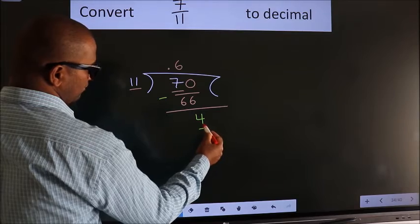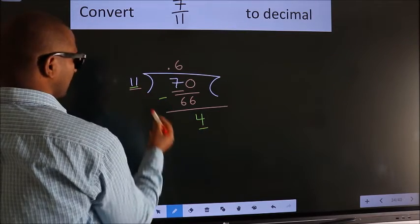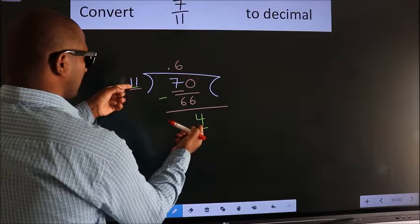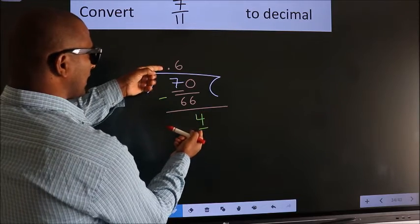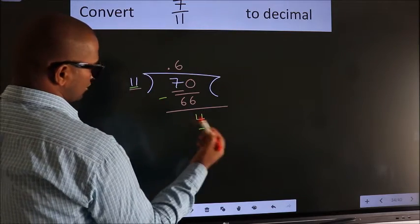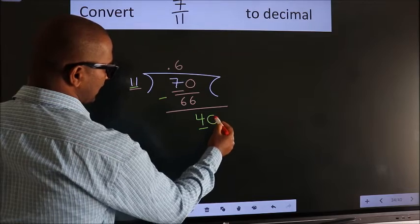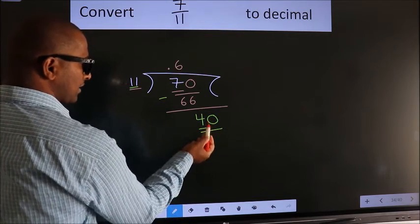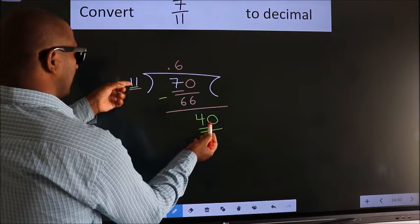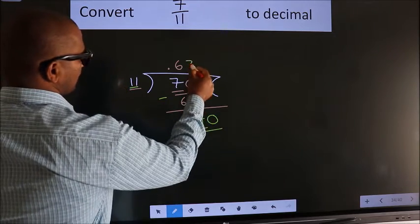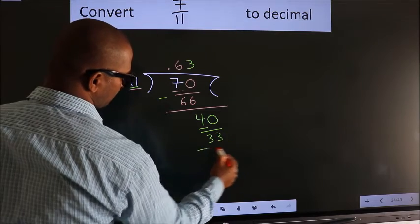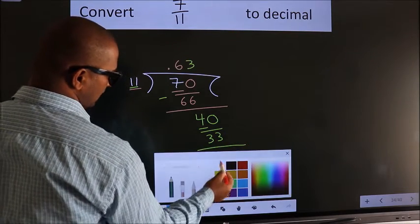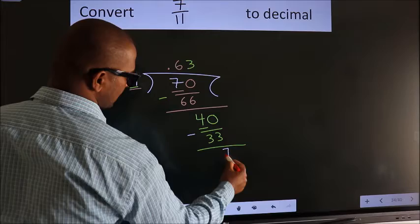Here we have 4. Here 11. 4 is smaller than 11, and we already have the decimal. So this time we can directly take 0. So 40. A number close to 40 in 11 table is 11 threes, 33. Now we subtract. We get 7.